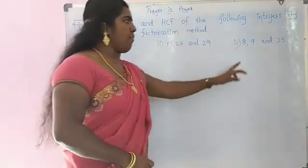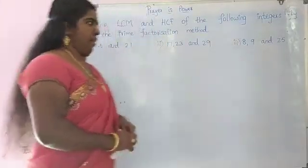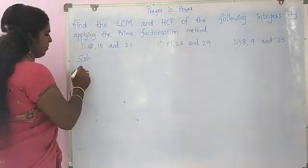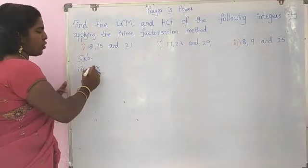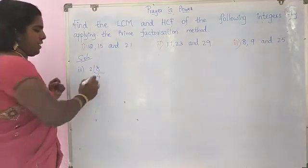First we find the factor of 8, 9 and 25. 8 is reduced by 2: 4. 4, 2 sub 8.